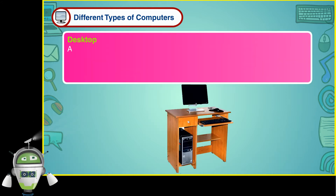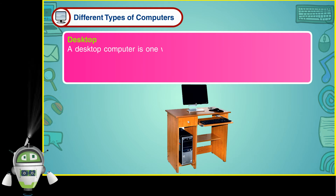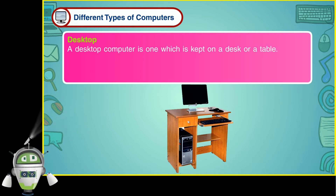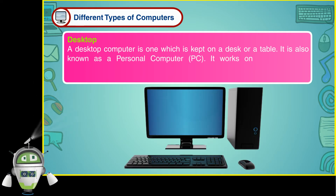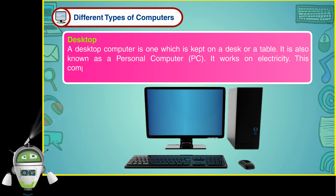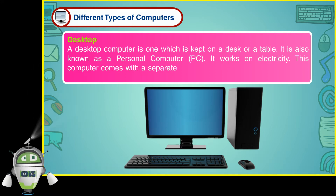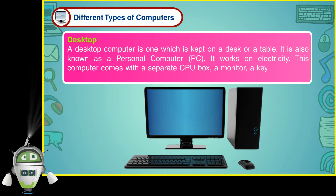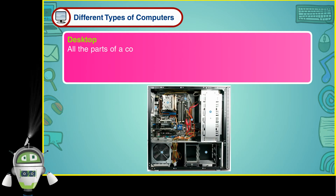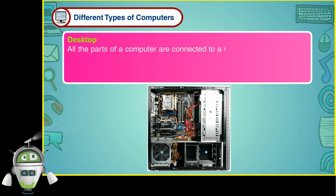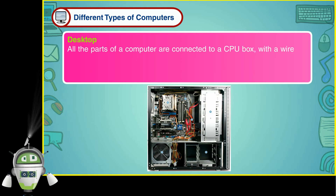A desktop computer is one which is kept on a desk or a table. It is also known as a personal computer, or PC. It works on electricity. This computer comes with a separate CPU box, a monitor, a keyboard, and a mouse. All the parts of a computer are connected to the CPU box with a wire.